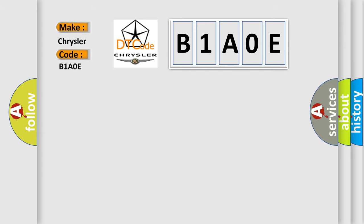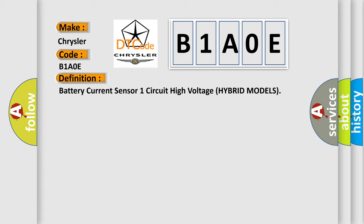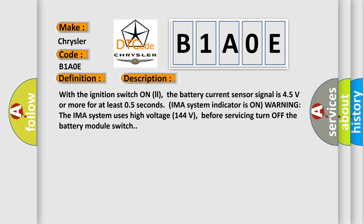The basic definition is battery current sensor one circuit high voltage hybrid models. With the ignition switch on, the battery current sensor signal is 4.5 volts or more for at least 0.5 seconds. IMA system indicator is on warning. The IMA system uses high voltage 144 volts. Before servicing, turn off the battery module switch.